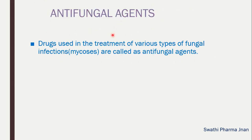How do we define antifungal agents? The drugs which are used in the treatment of various types of fungal infections, that is mycosis, are called antifungal agents. These antifungal agents are classified based on their activity into two categories: narrow spectrum antifungal agents, which can act only on one specific type of species, and broad spectrum antifungal agents, which can show antifungal activity on different types of species.